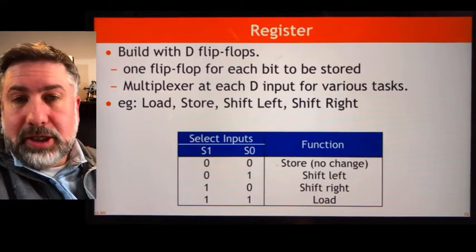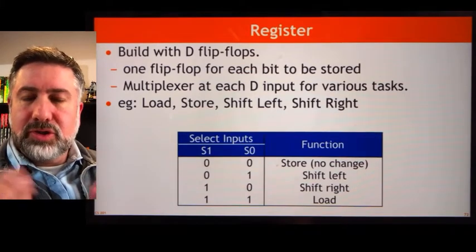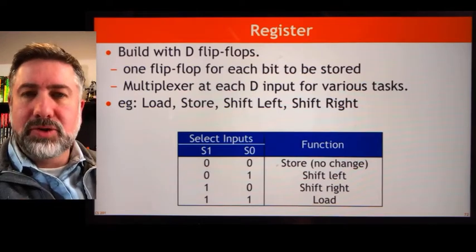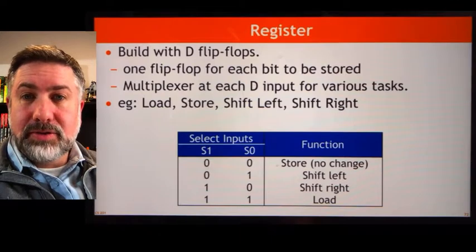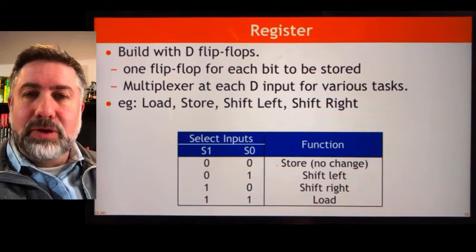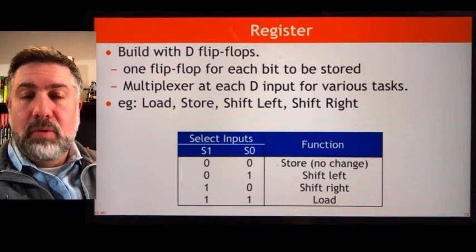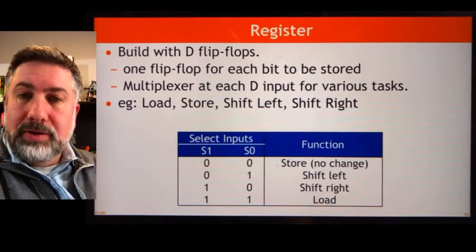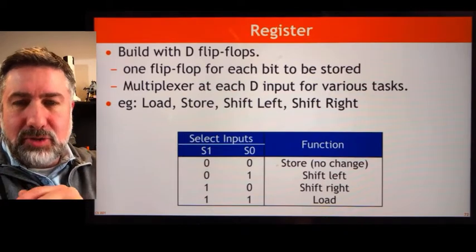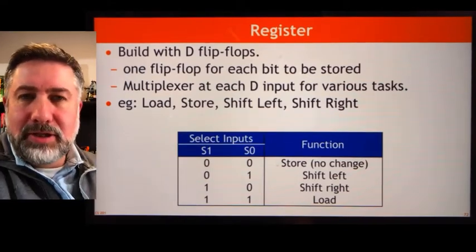A register is just a collection of D flip-flops, because the D flip-flop is the flip-flop we use when we want to store a piece of information. We present the information we want to store at the input of the flip-flop. The design process is very straightforward — we use a multiplexer to select what we present at the input of the D flip-flop. We build one slice of the register first, called a bit slice, just like when we built adders and subtractors.